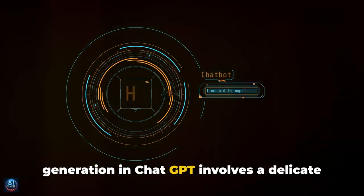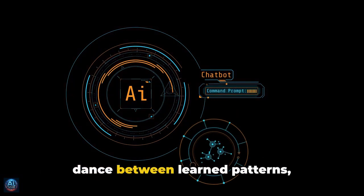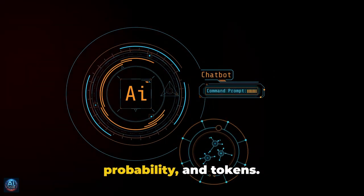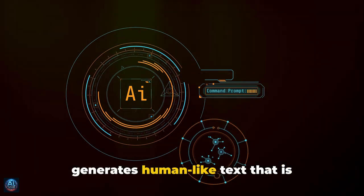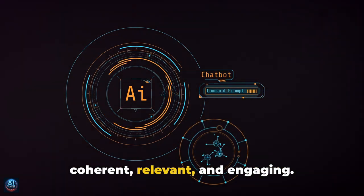In essence, the art of response generation in ChatGPT involves a delicate dance between learned patterns, probability, and tokens. Through this intricate process, it generates human-like text that is coherent, relevant, and engaging.